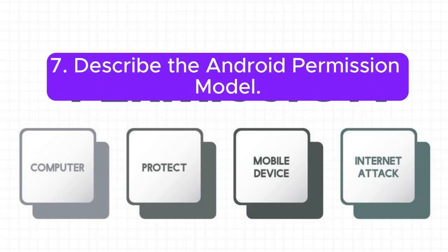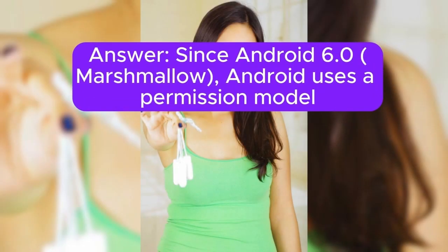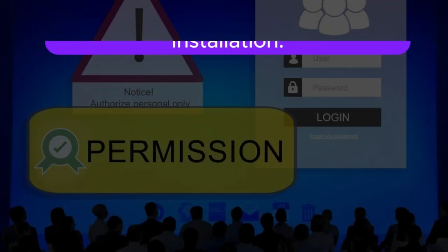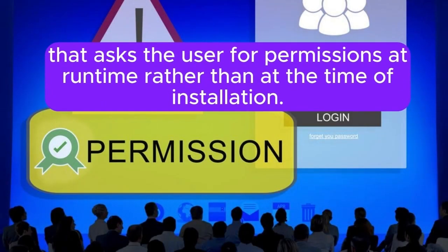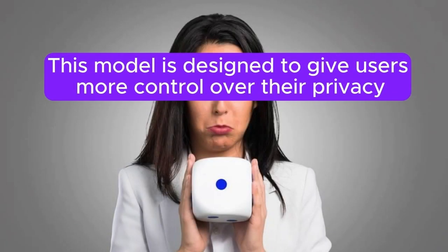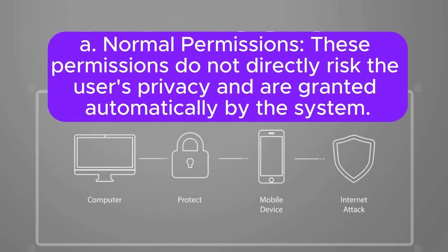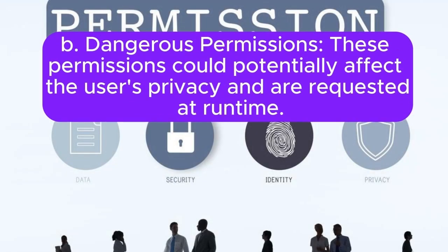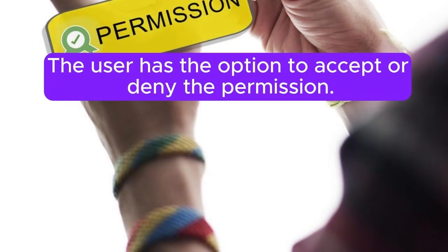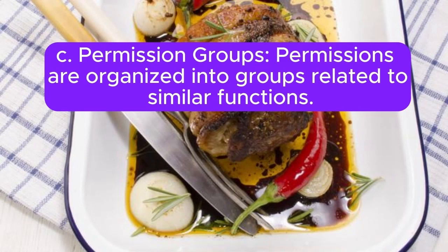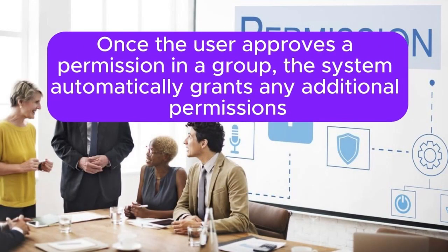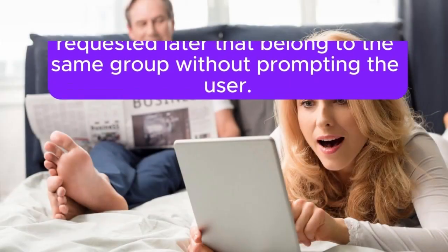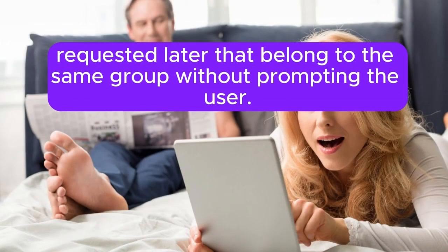Question 7: Describe the Android permission model. Since Android 6.0 Marshmallow, Android uses a permission model that asks the user for permissions at runtime rather than at installation, giving users more control over their privacy. Normal permissions do not directly risk the user's privacy and are granted automatically. Dangerous permissions could affect the user's privacy and are requested at runtime — the user can accept or deny. Permissions are organized into groups; once the user approves one permission in a group, the system automatically grants additional permissions in that same group without prompting.